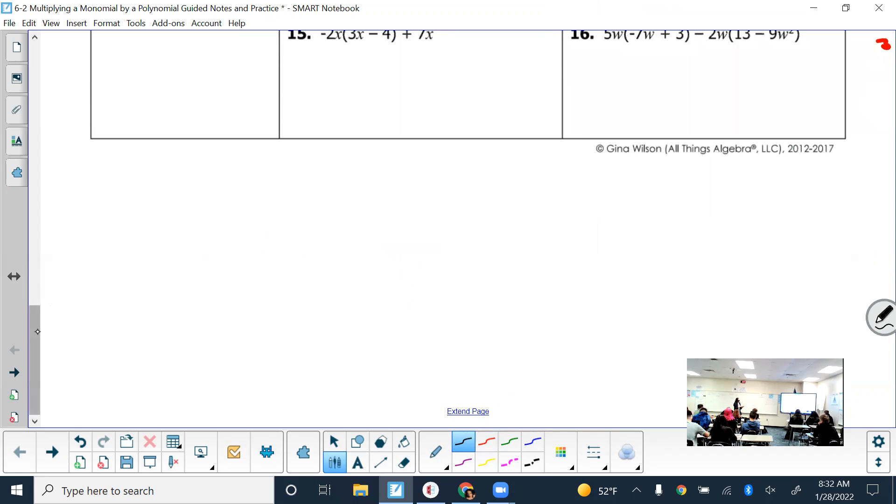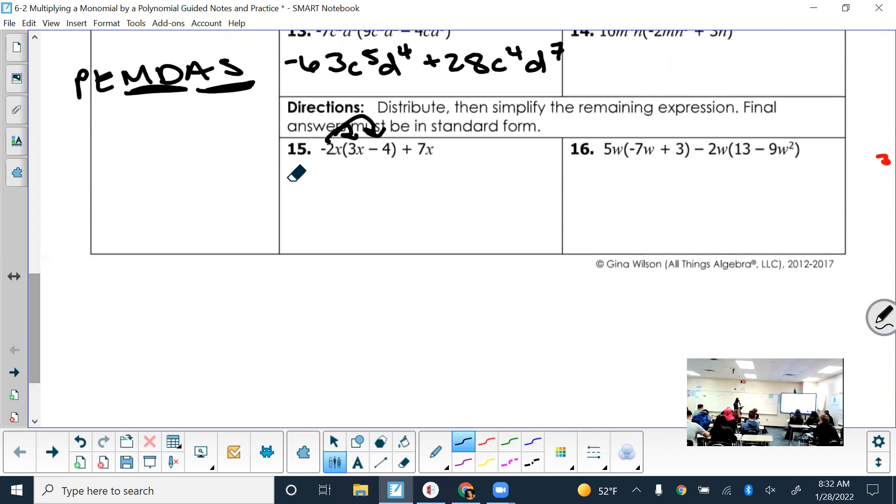So you distribute that negative 2x. What do we get when we distribute? Negative 6x squared. And then negative 2x times negative 4? Positive 8x. So any questions about how we got that? That's all we do is distribute. Don't forget there's still a plus 7x here, so just bring that down.